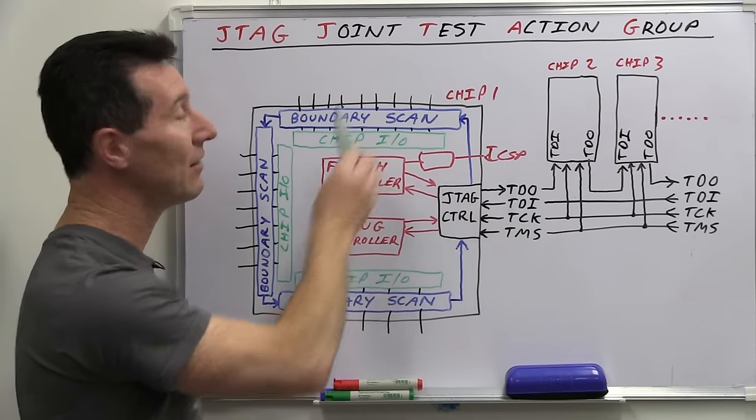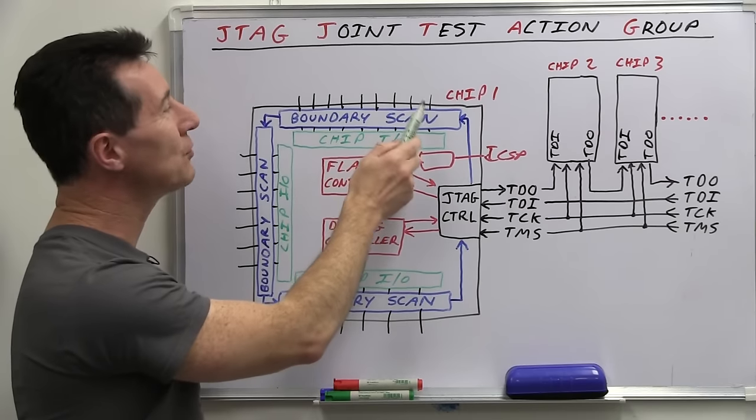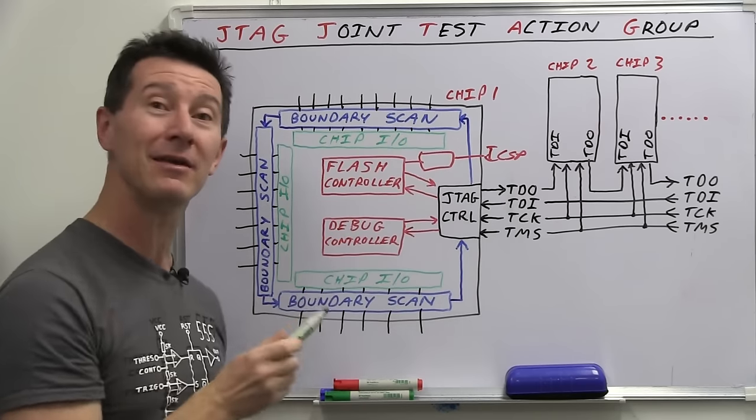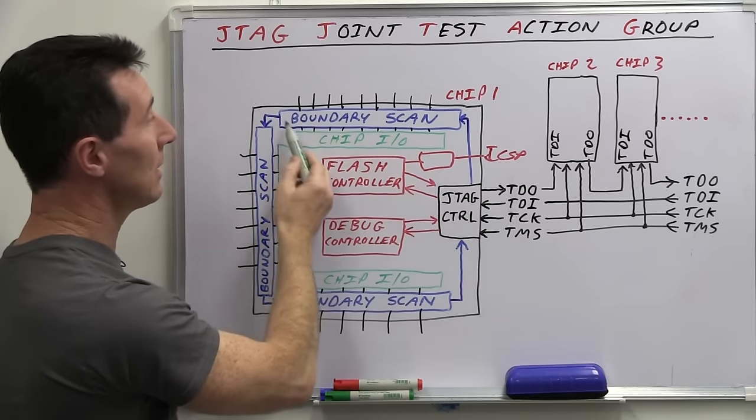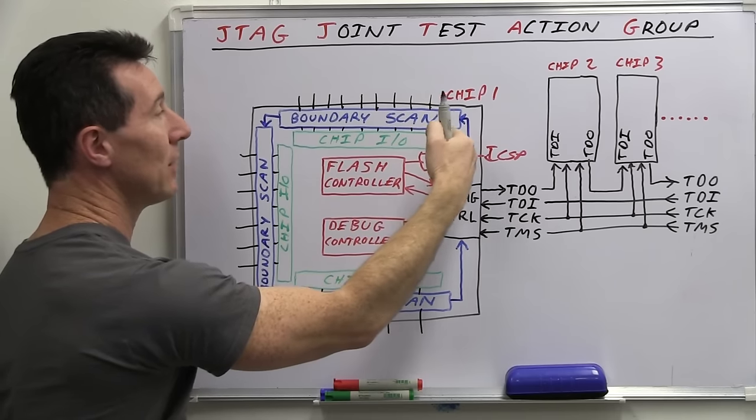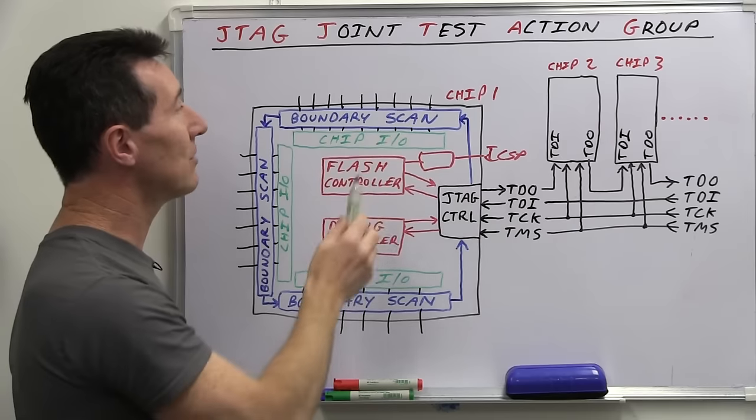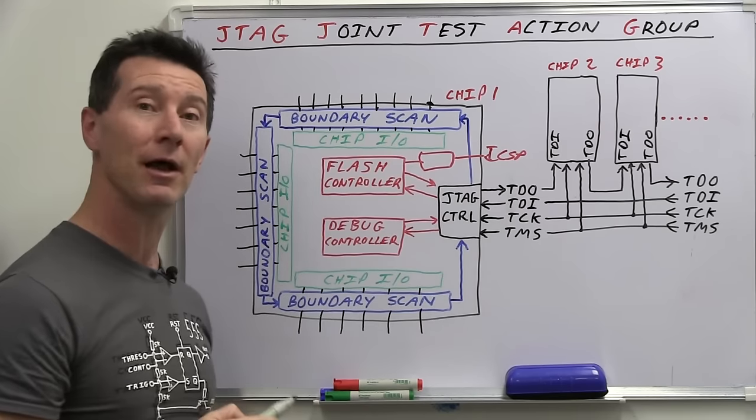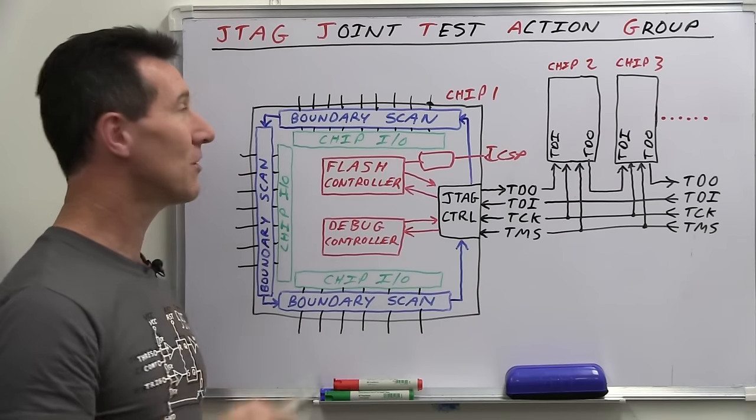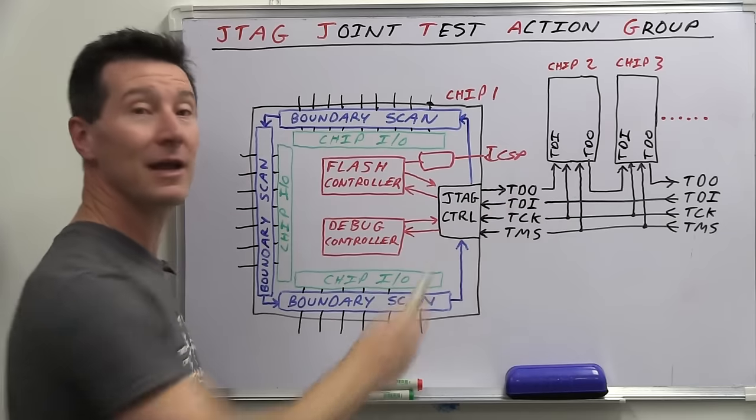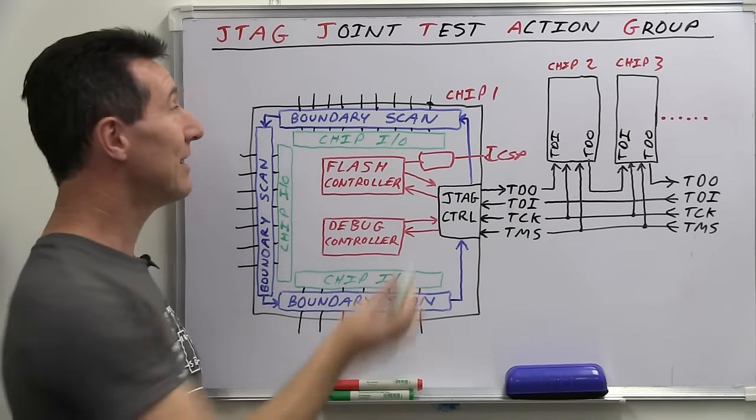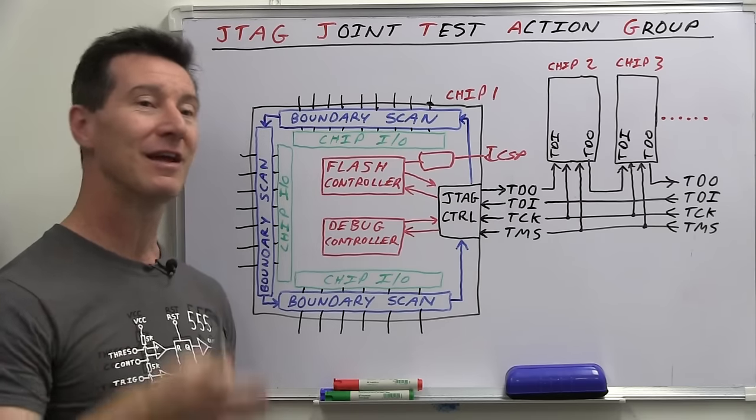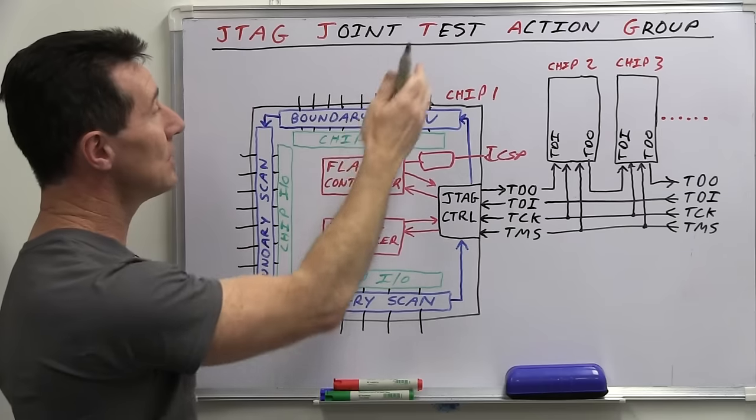Well, it depends on the functionality built into the boundary scan. But most of them are going to allow you full direct control over that IO pin. Not only are you able to read the value back directly on the pin of the chip, I've shown it actually sort of after the chip IO here. It's in between the chip IO driver and the pin. Because the idea of boundary scan is you physically read the actual electrical value on that pin. Not after any of the chip IO or anything like that. It actually allows you to read exactly what's on the pin itself.